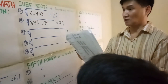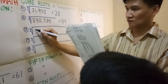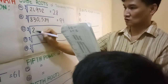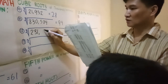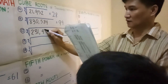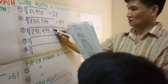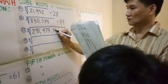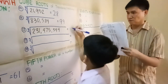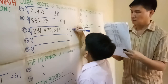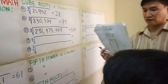Bravo! What is number 12? What is the cube root of 231,475,544? 644. Bravo. Correct.